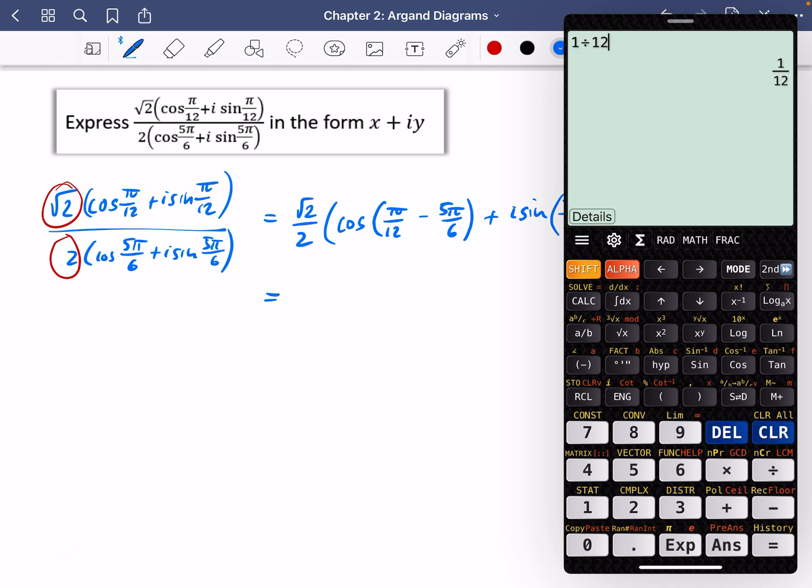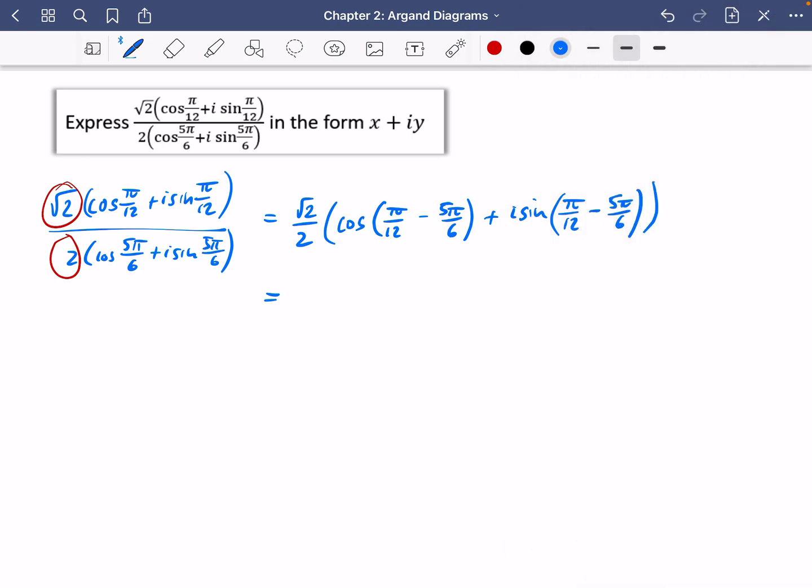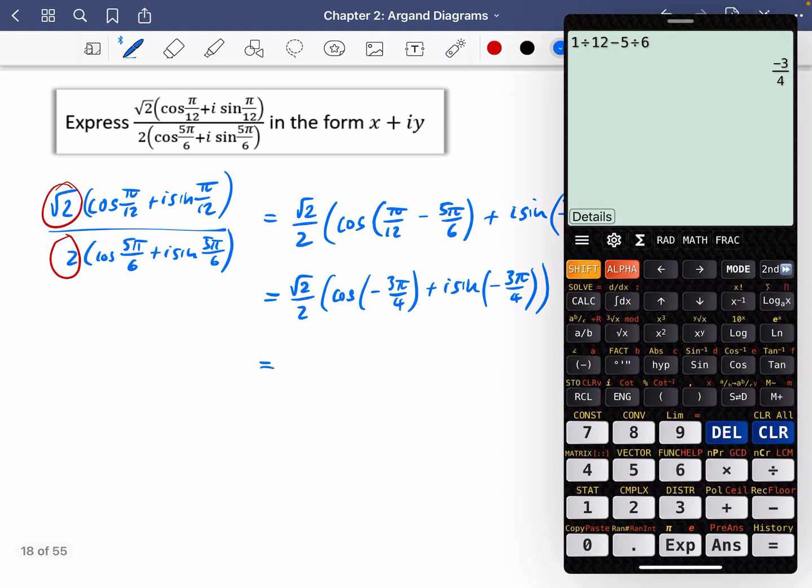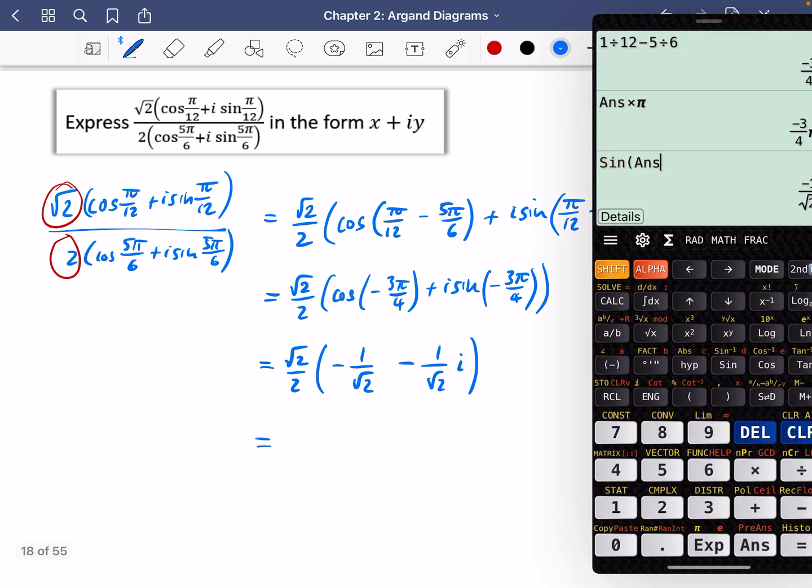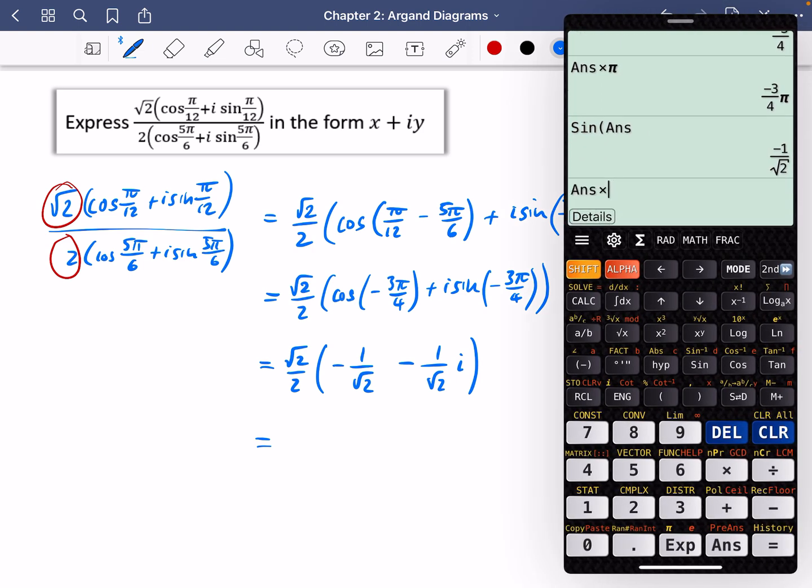So let's work out what is π/12. Can't be bothered to type in the π. So I'm just going to do 1/12 minus 5/6. So it's minus 3/4 π. So it's going to be √2/2 cos of -3π/4 plus i sine -3π/4. Now I could do this without a calculator. So I'm feeling pretty lazy. So let's get that answer and multiply it by π. Now let's do the cos of that. So that's -1 over √2. So that's √2/2 multiplied by -1 over √2. And let's do the sine of that answer as well. And so that's also -1 over √2. So that is going to be -1 over √2 i. So let's multiply both of those by √2/2 multiplied by √2/2 and we get -1/2.